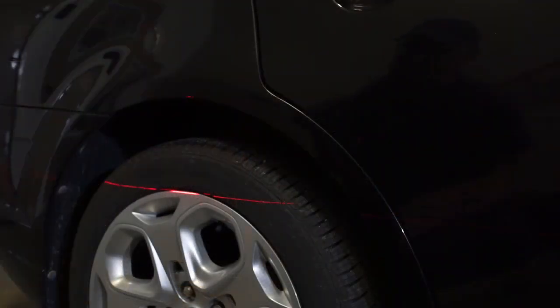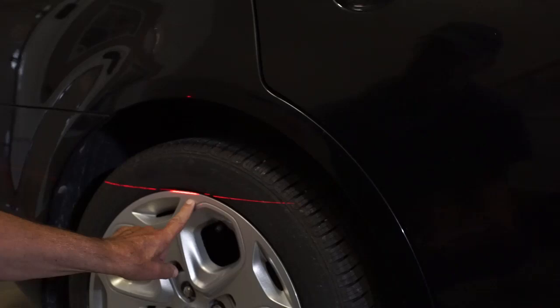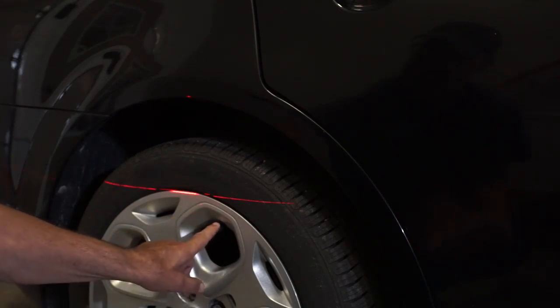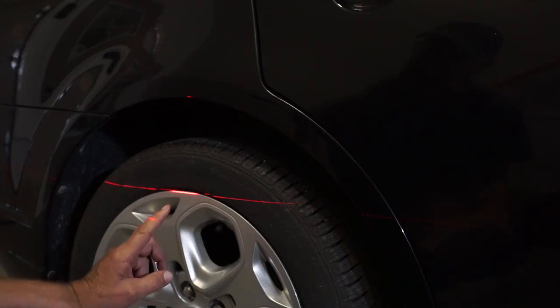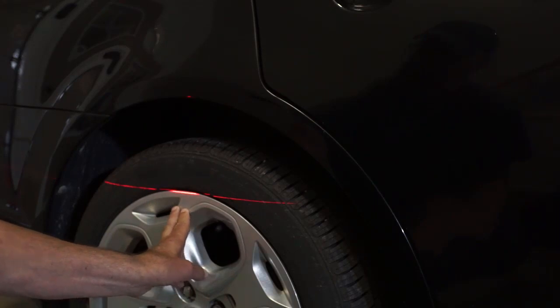The first step is leveling the vehicle. Left to right is not as critical as front to rear. This horizontal laser beam runs straight across to the front rim as well. Initially, the rear tire was 3/8 of an inch higher than the front. Now I removed a bit of air, and I also removed some air on the left-hand side as well. Now the vehicle is perfectly level front to rear.